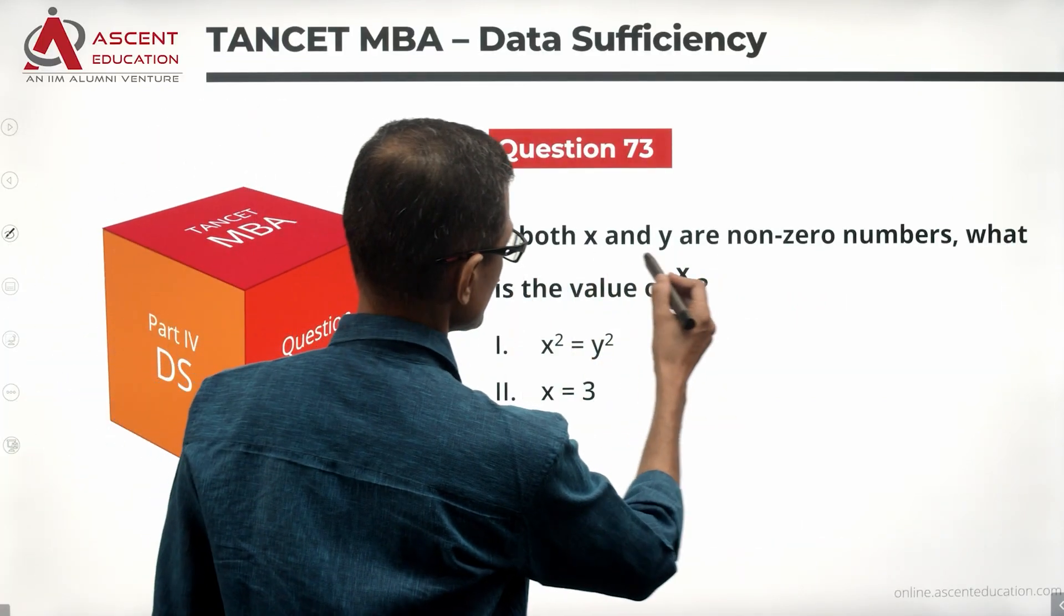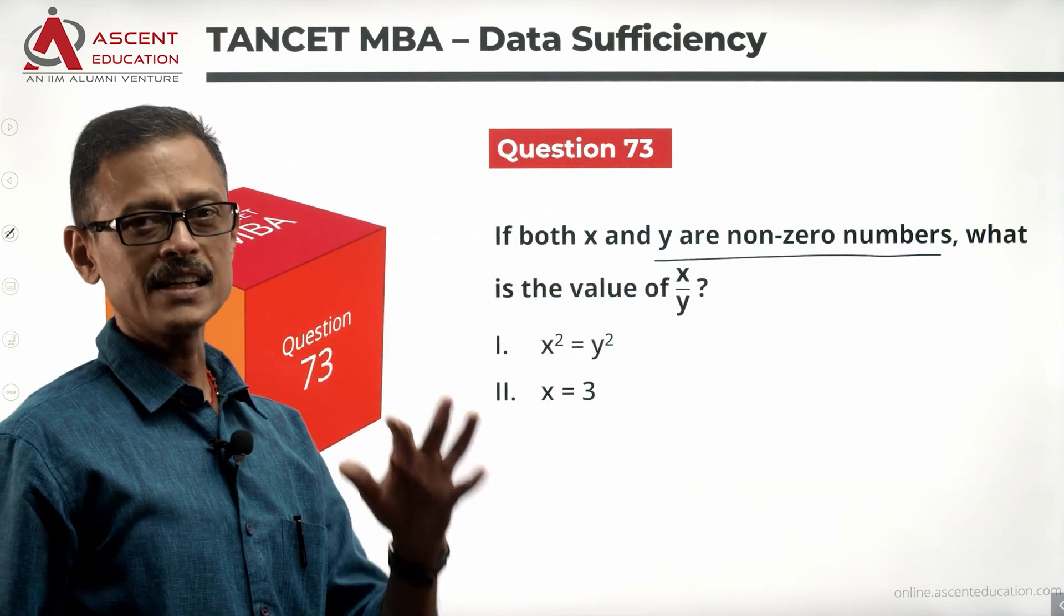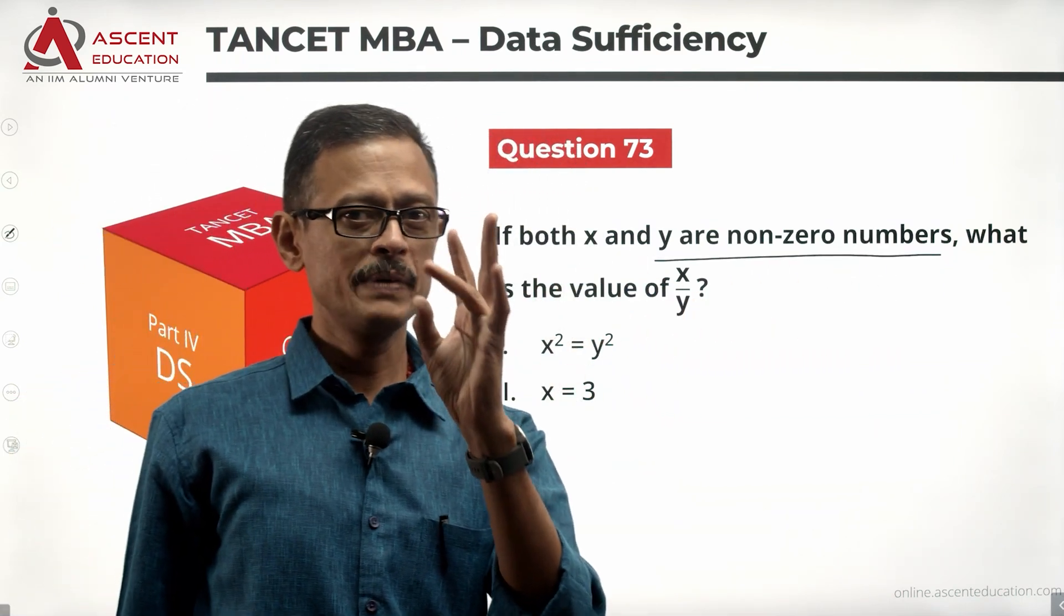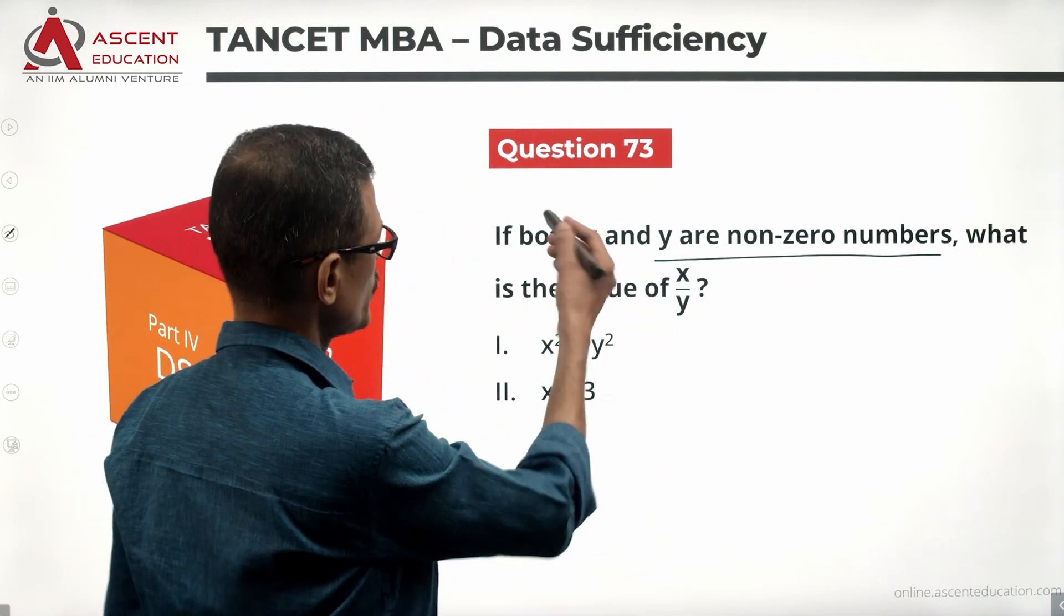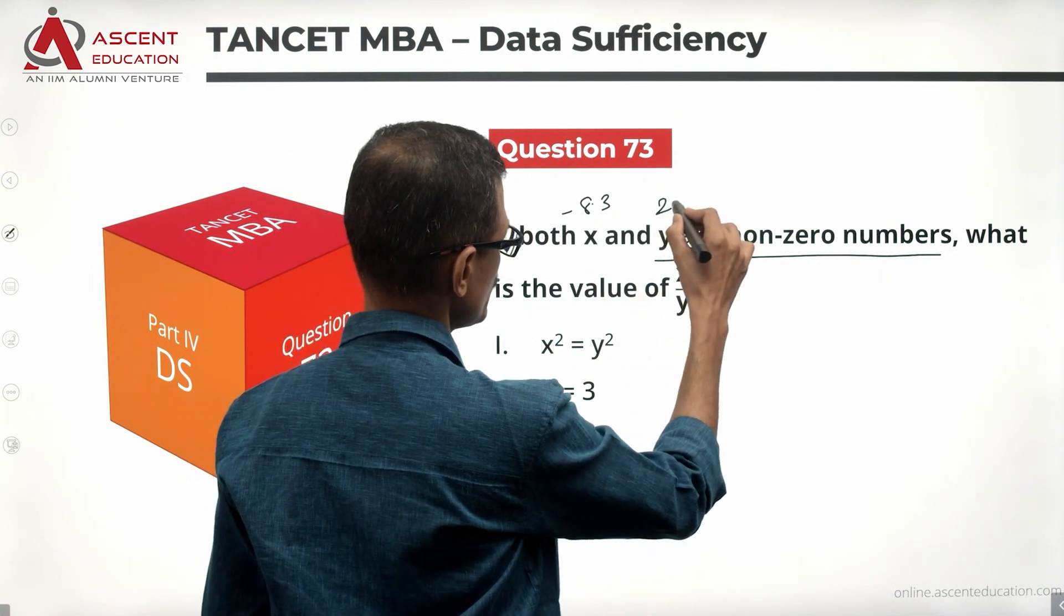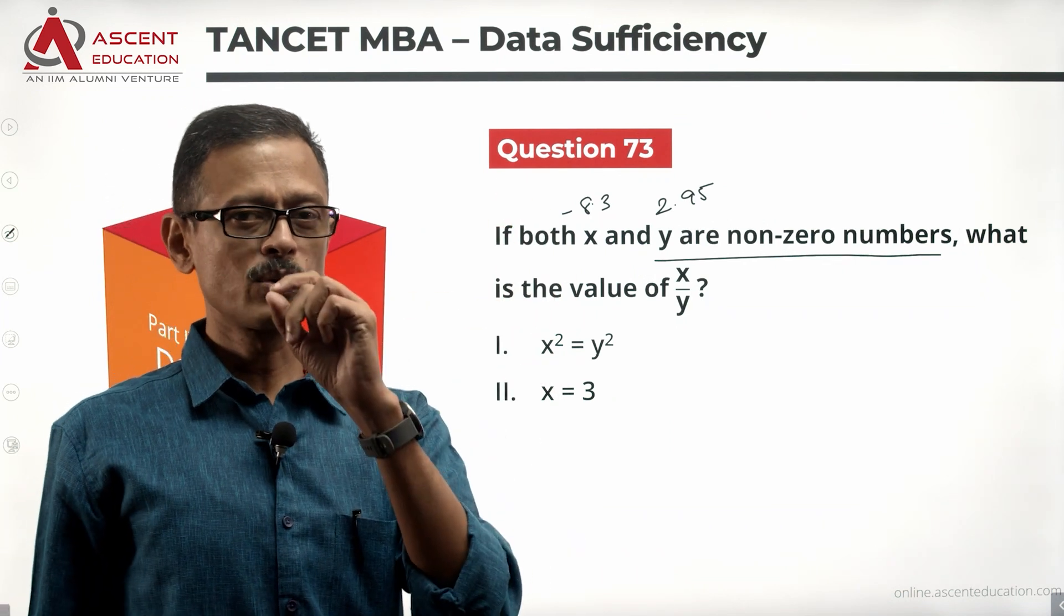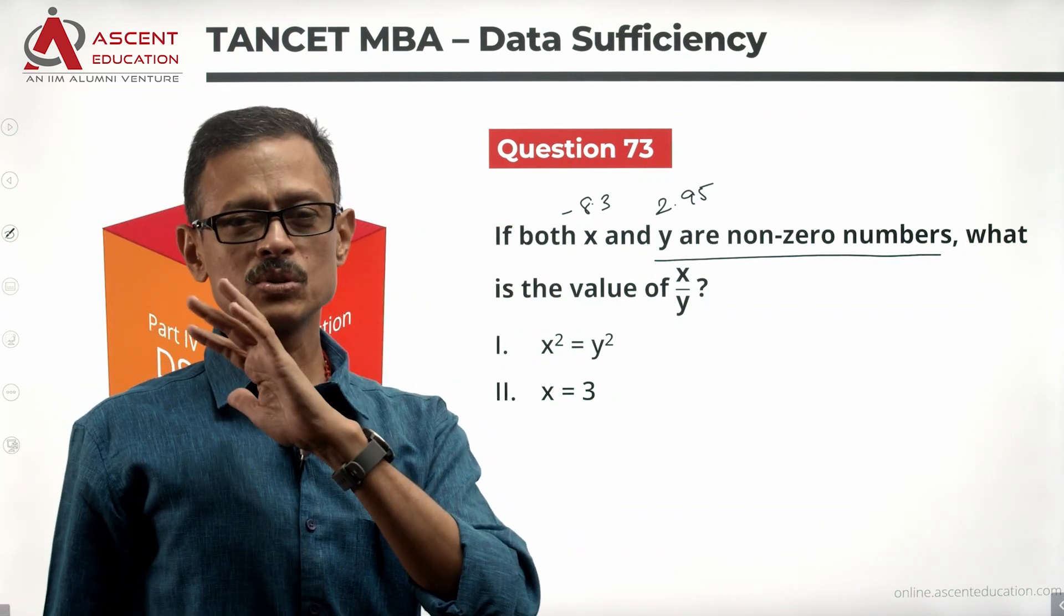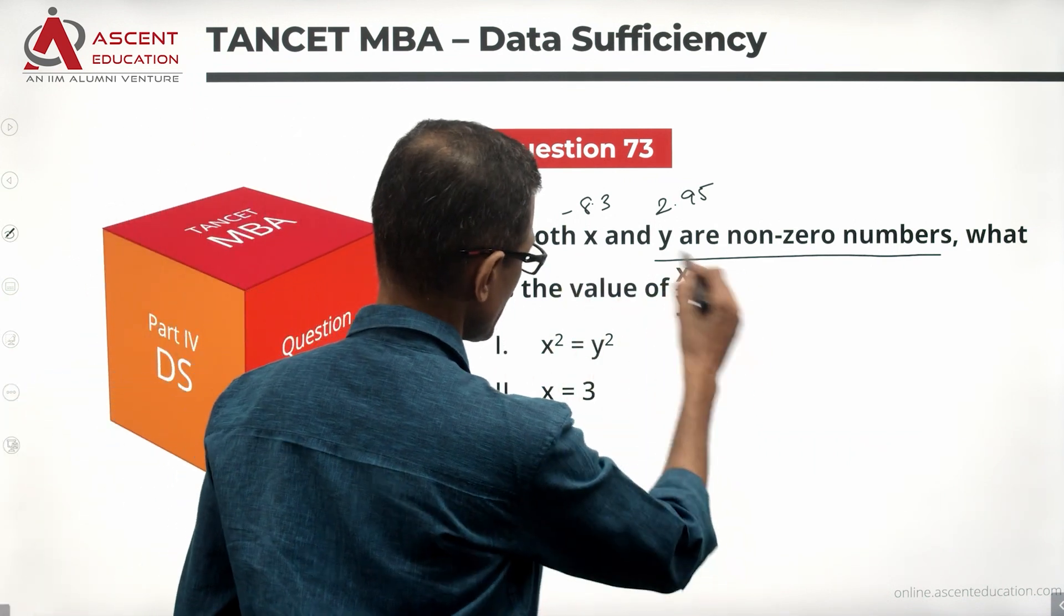Look at the question. If both x and y are non-zero numbers—non-zero could be positive, could be negative, integer or non-integer. For example, x could be minus 8.3, y could be 2.95. They are non-zero numbers, so don't think of it as only positive numbers or only integers. What is the value of x by y?